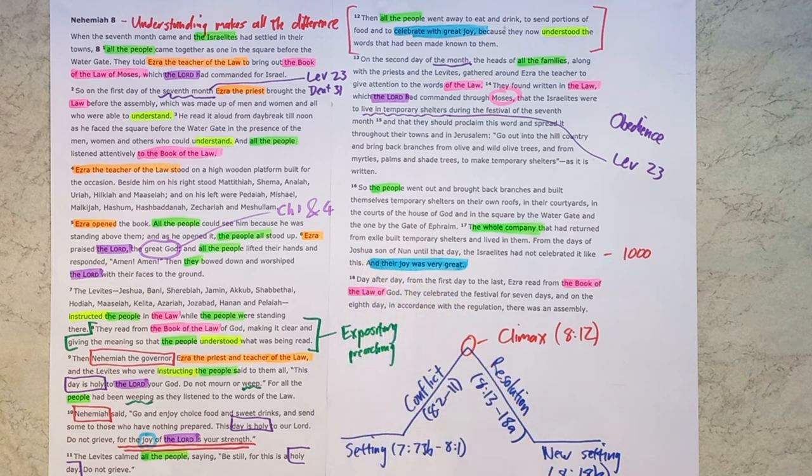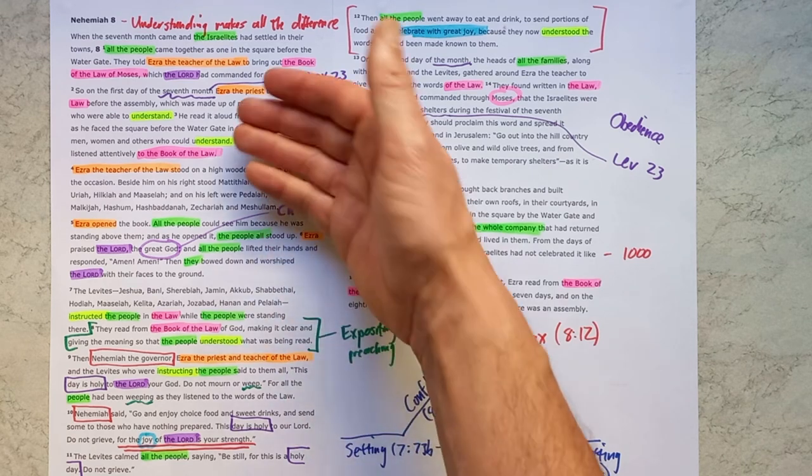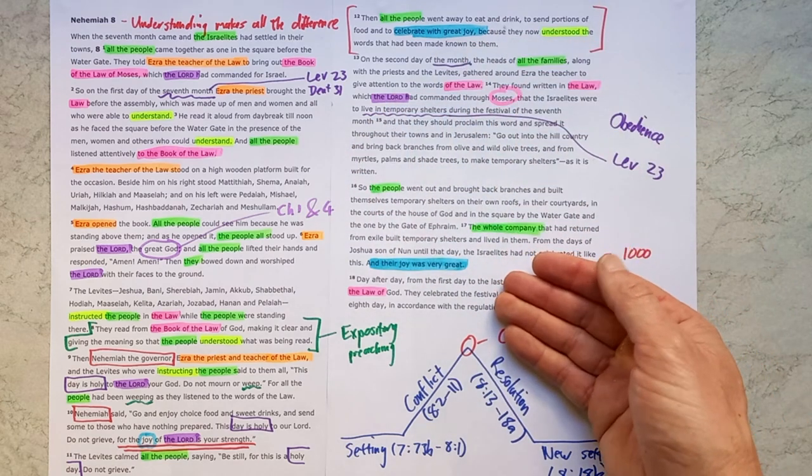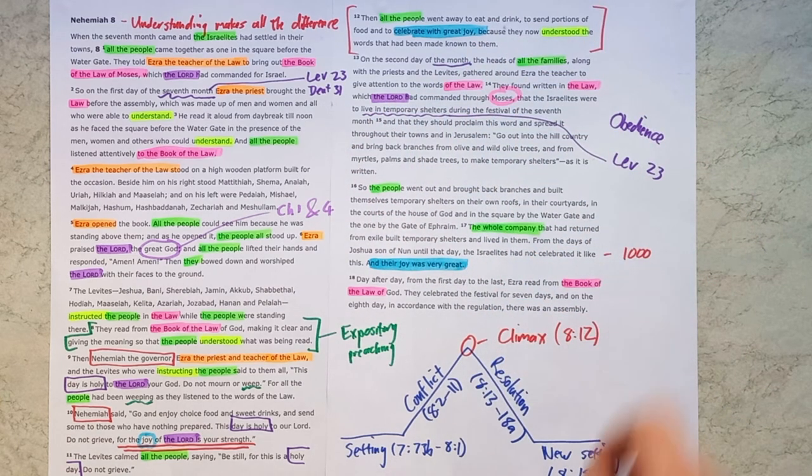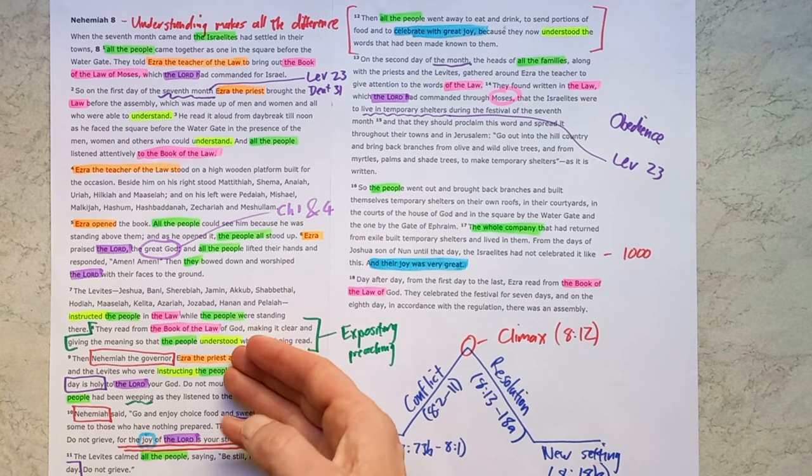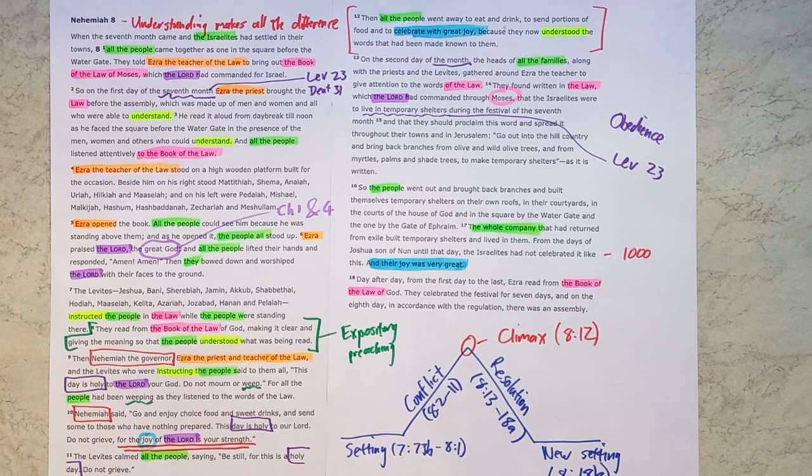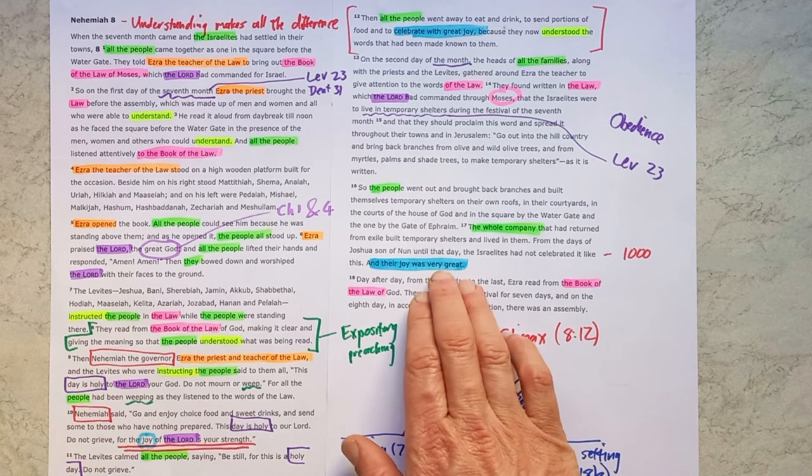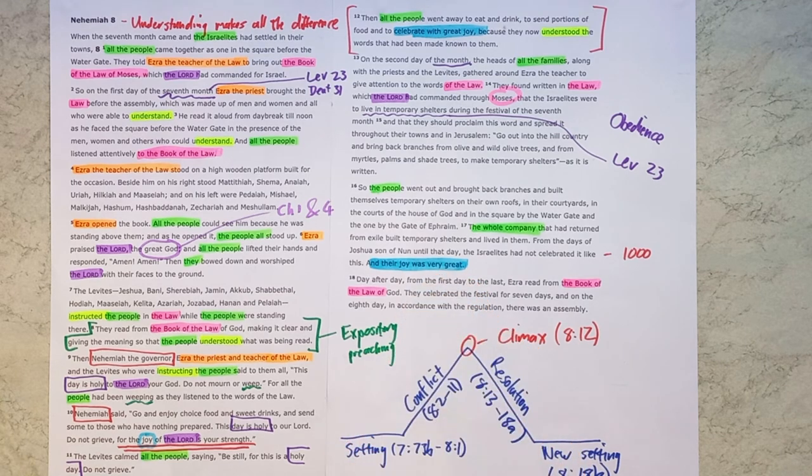I think a very important thing for us to see here is that obedience to God's word is not an optional extra for God's people. That's what these people came to realize. They hadn't been obeying properly for the last thousand years. But now that they understood, they realized we've got to obey this command. And it's not a begrudging thing to obey. It's actually for our good, and it will cause us to rejoice because we are remembering what a great God we serve and how he saved us.